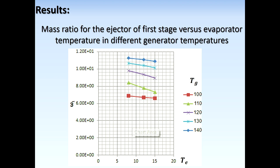The next slide shows the mass ratio of the first-stage ejector versus evaporator temperature. As evaporator temperature increases, the mass ratio decreases, and the ejector exhaust temperature also decreases. These occur at constant generator and condenser temperatures. Meanwhile, as evaporator temperature increases, the heat of the evaporator increases while the generator heat and pump work remain constant, so the COP increases in this case.